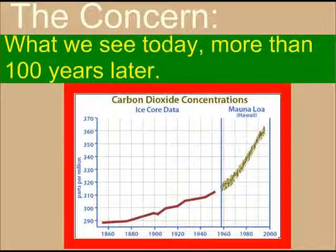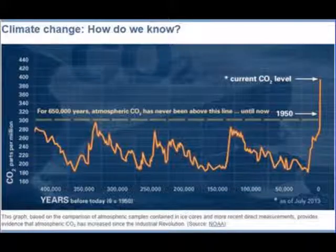This is based largely on ice core data that we're going to learn about in class. You can see that for 650,000 years, the atmospheric CO2 has never been above 300 parts per million — until the 1940s, when it's gone up and up and up, and it's nearly approaching 400 parts per million.